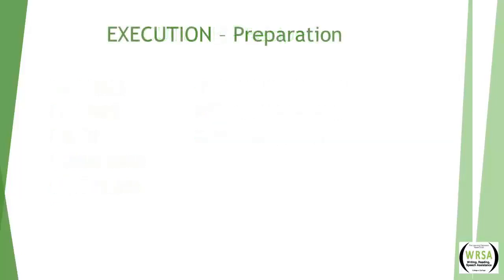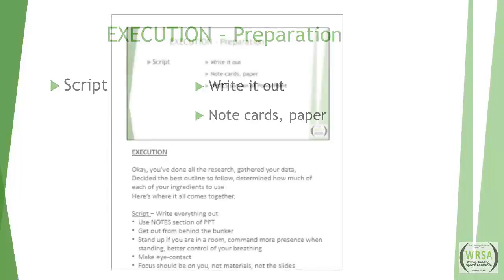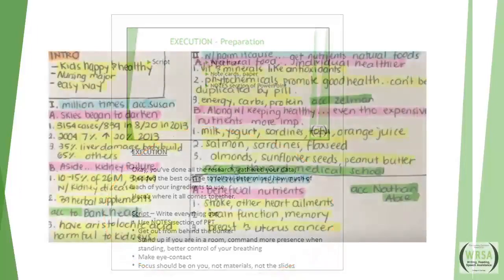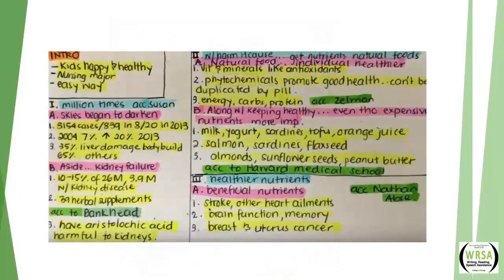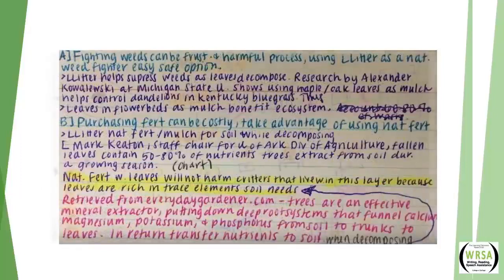You've done all the research, gathered your data, decided the best outline to follow, and determined how much of each of your ingredients to use. Here's where it all comes together — in the execution. Your script. Write everything out verbatim, and then break it down into bullet points, onto note cards, or onto paper. You can even use the notes section of your PowerPoint. When you write it out, you want to make sure that it's easy to glance up and down and still quickly find your place. Some people use highlighters, some use arrows or bold or whatever works.